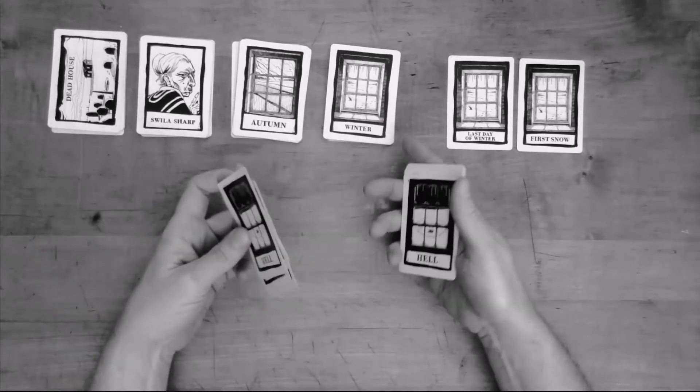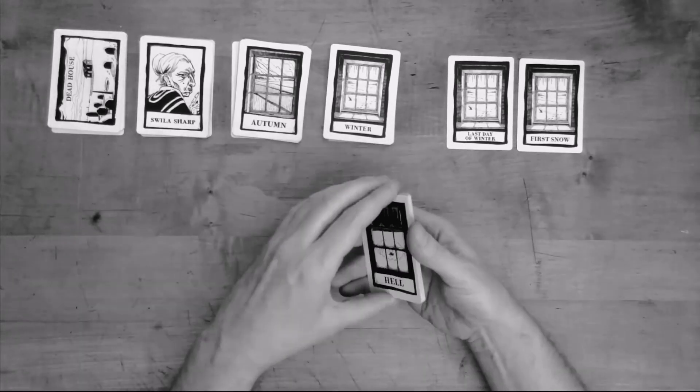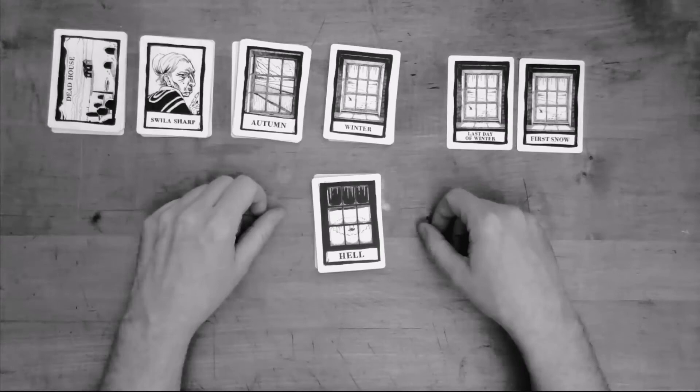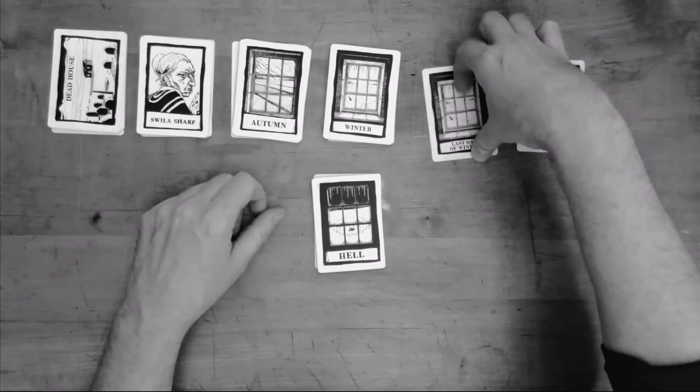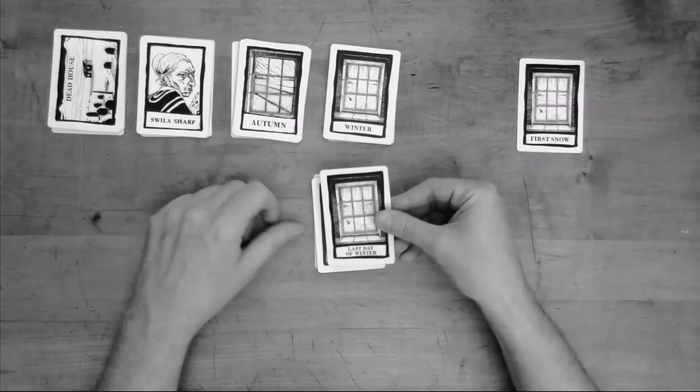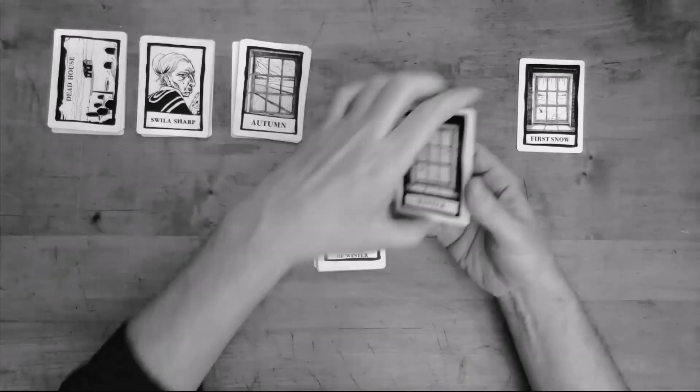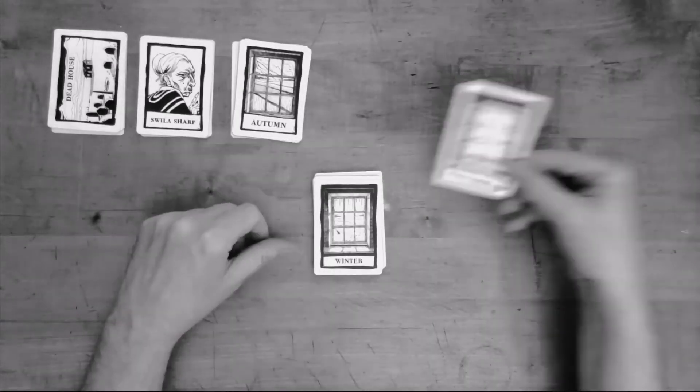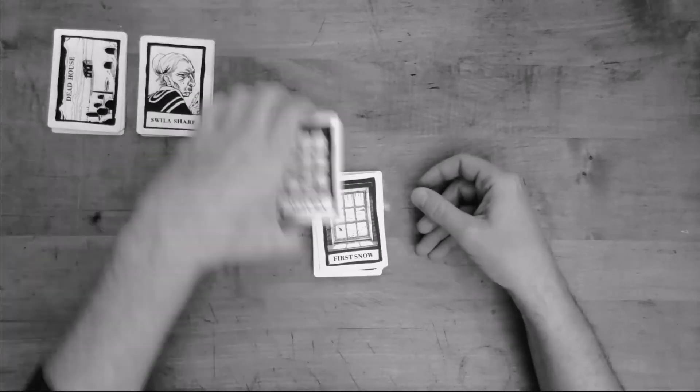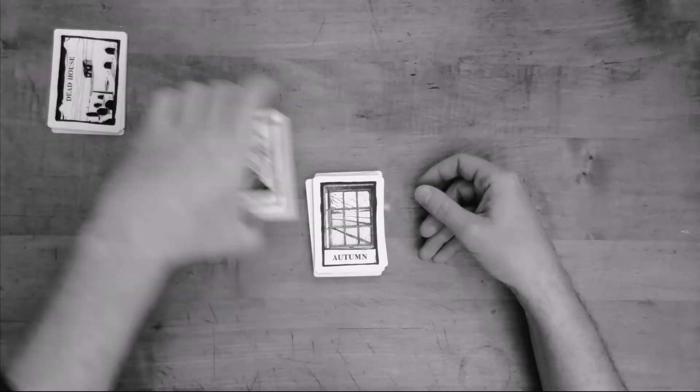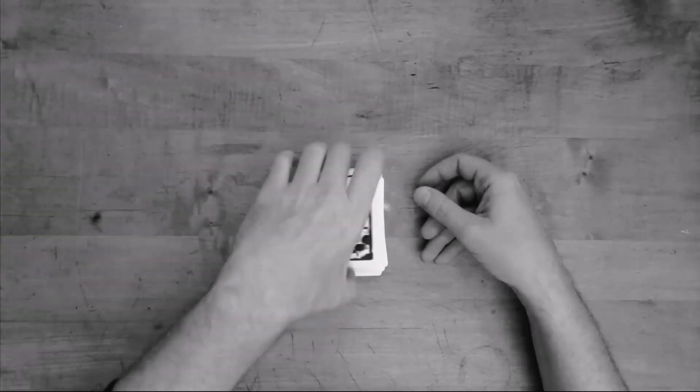Then we've got a hell deck. We're going to put the last day of winter on top of that because we're now going backwards in chronological order, and then winter on top of that, first snow on top of that, autumn, the people, the locations, and you are ready to play Dread House.